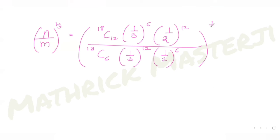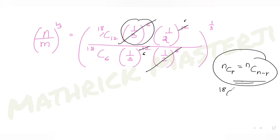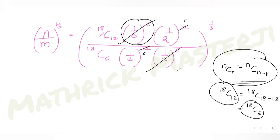We need to compute (n/m)^(1/3). Writing out n/m: the numerator has 18C12 · (1/3)^6 · (1/2)^12 and the denominator has 18C6 · (1/3)^12 · (1/2)^6. Since nCr = nC(n−r), 18C12 = 18C(18−12) = 18C6, so the binomial coefficients cancel.